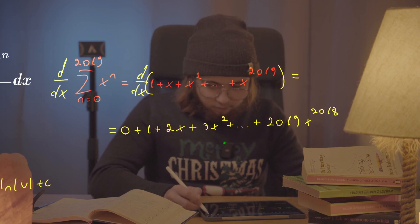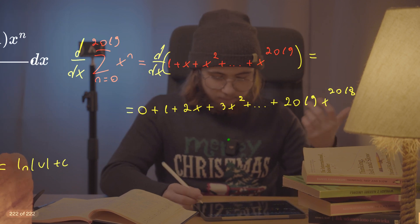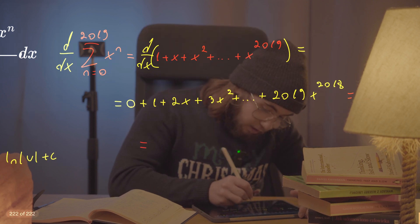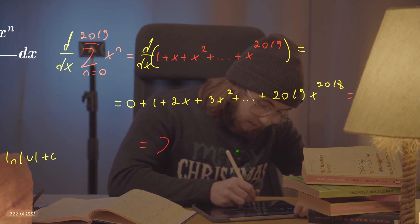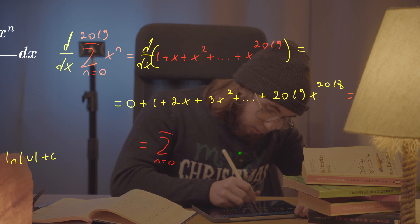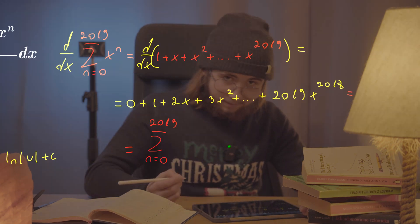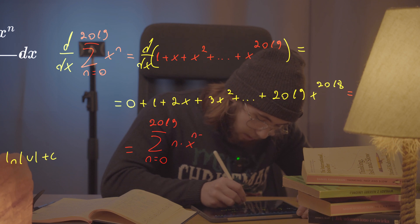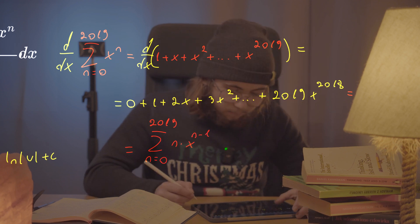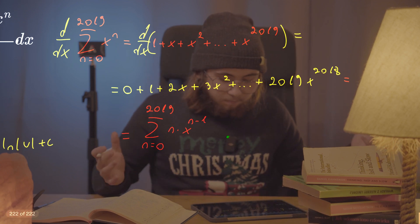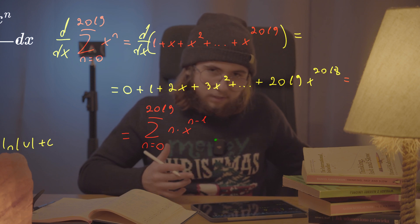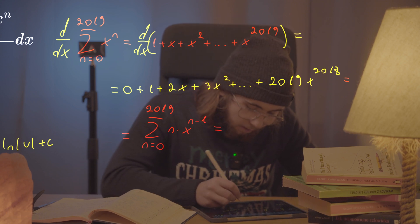Now if I use sigma notation to write this, I get the sum as n goes from 0 up to 2019 of n multiplied by x to the power of n minus one. But now I just shift the indexes.